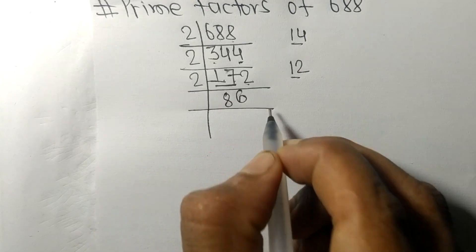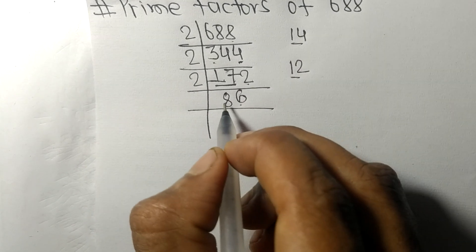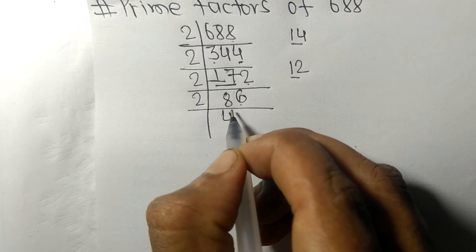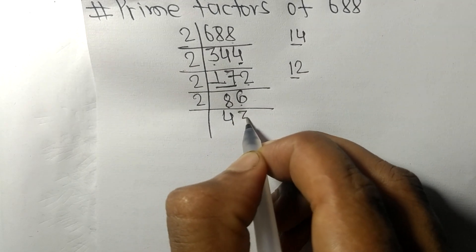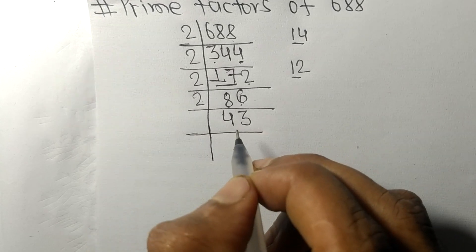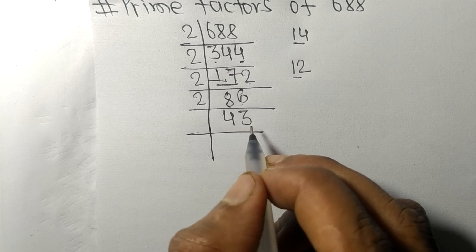Again we have an even number 6 at last, so it is divisible by 2. Two times 4 is 8, two times 3 is 6. Now we got 43, which is our prime number, so it is divisible by 43 itself.